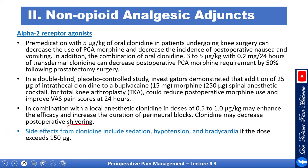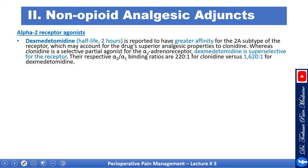Side effects from clonidine include sedation, hypotension, and bradycardia if dose exceeds 150 mcg. Dexmedetomidine is the other popular alpha-2 receptor agonist, with a half-life of two hours. It has a greater affinity for the 2A subunit of the receptor, which may account for its superior analgesic properties compared to clonidine. Clonidine is a selective partial agonist with an alpha-2 to alpha-1 binding ratio of about 220:1, whereas dexmedetomidine is super-selective at 1620:1.